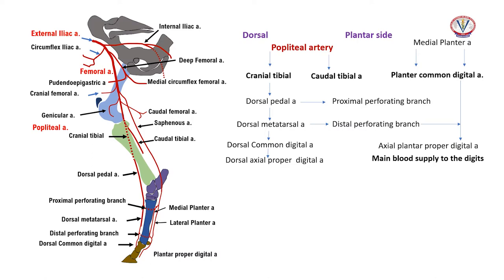A second perforating artery is released towards the fetlock. The perforating branches join the plantar arteries to form the medial plantar artery and are connected by a small deeper vessel. The posterior tibial artery is the smaller of the two and supplies the popliteus and deep flexor of the digits.